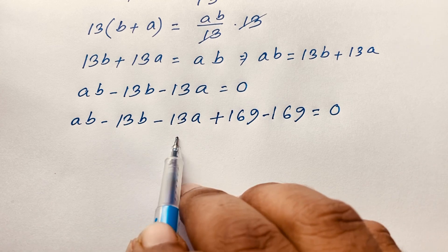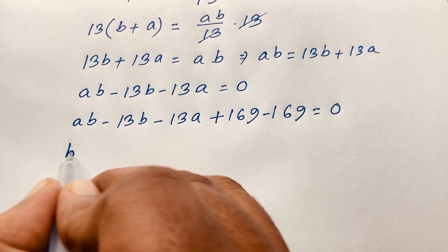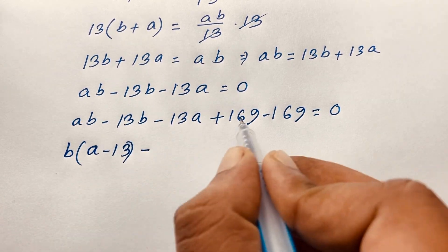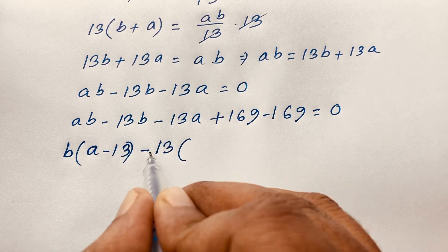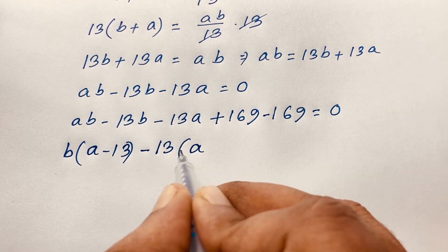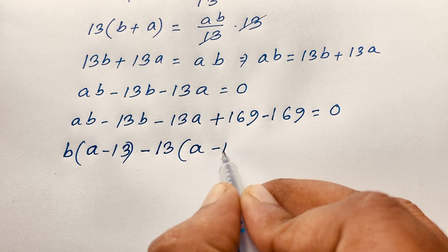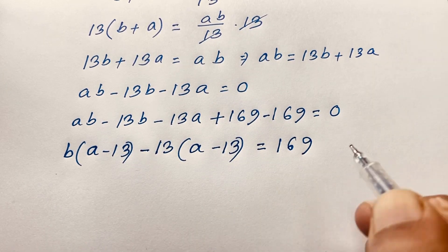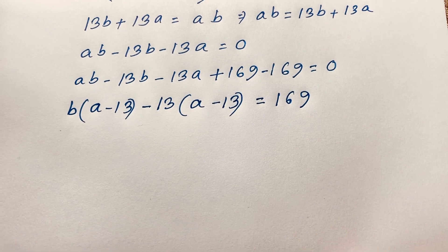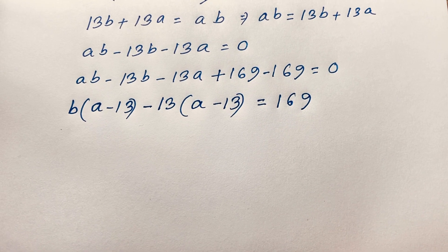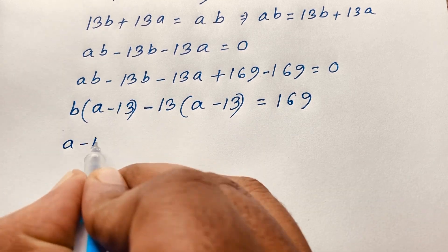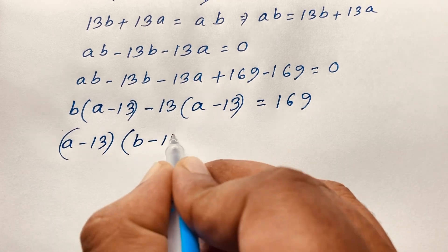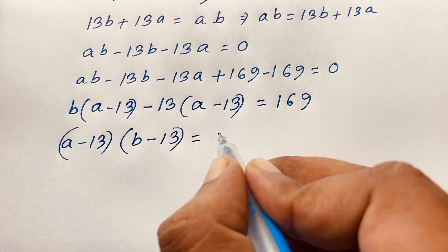Looking at av minus 13v, v is common, so that factors as v times (a minus 13). Then, taking 13 as common from the remaining terms gives minus 13 times (a minus 13). Adding 169, we can write this as (a minus 13) times (v minus 13) is equal to 169.